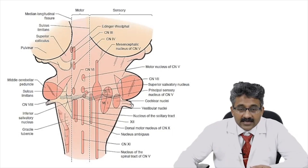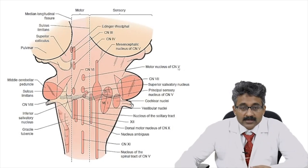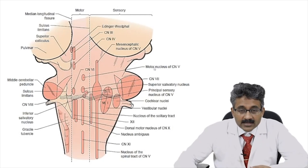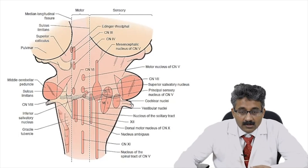Coming to the pons: after the fourth, the fifth — see here is the fifth cranial nucleus, the motor nucleus. It has both motor and sensory nuclei. The sensory nuclei include: the mesencephalic nucleus of the fifth nerve, then the principal sensory nucleus of the fifth nerve — see here — and the descending nucleus of the fifth nerve, which extends all the way down to the spinal cord.